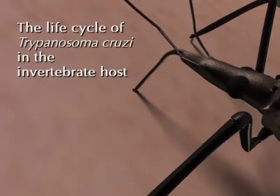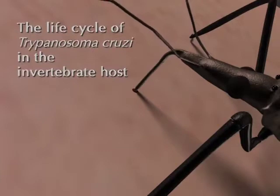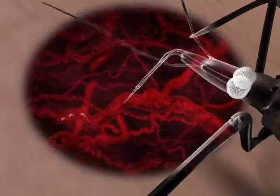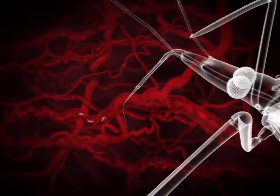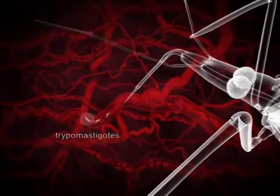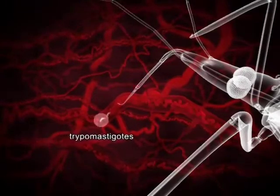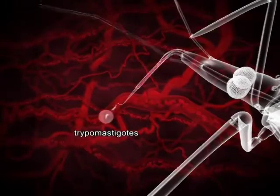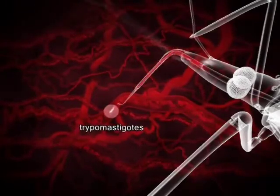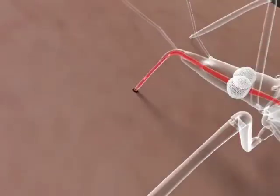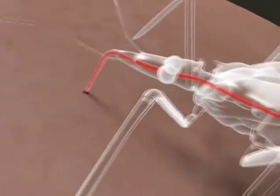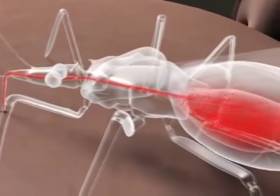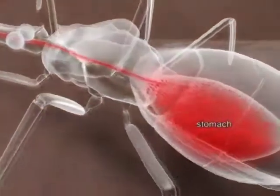The life cycle of Trypanosoma cruzi in the invertebrate host. In this video, we see the life cycle of Trypanosoma cruzi in the insect. The life cycle begins with the ingestion of trypomastigotes present in the blood of the vertebrate host during a blood meal.